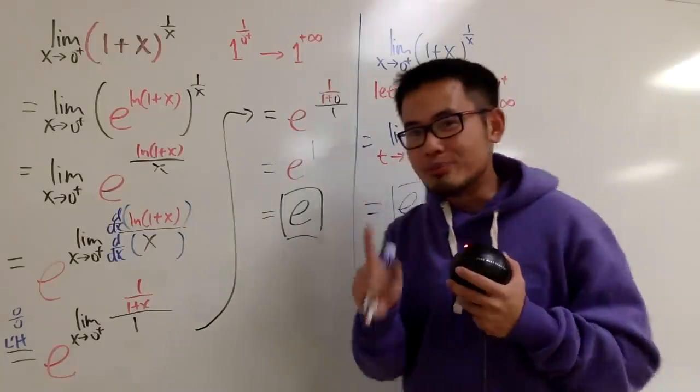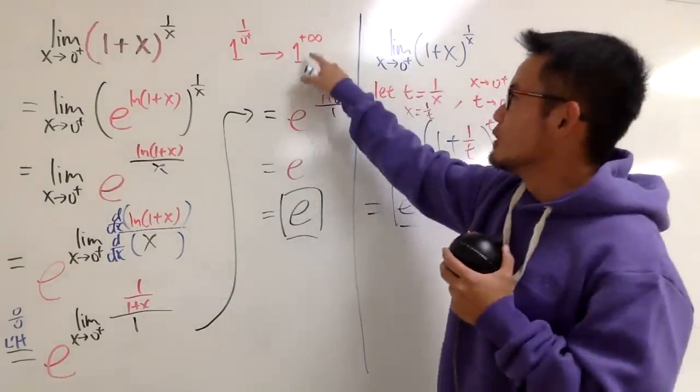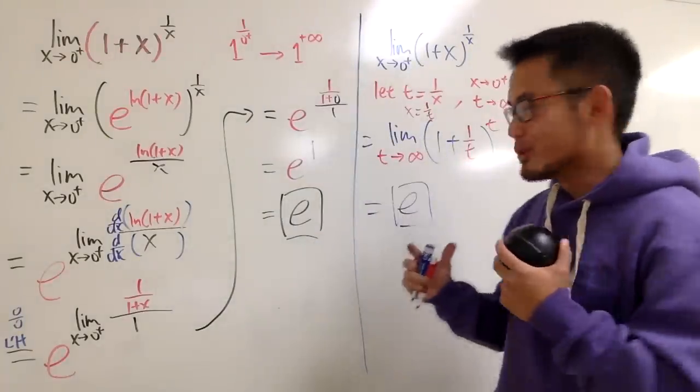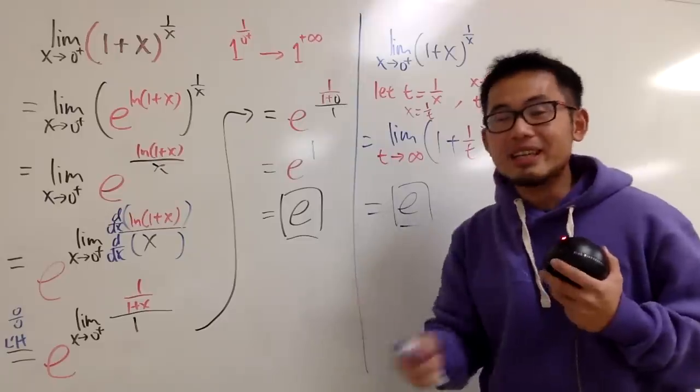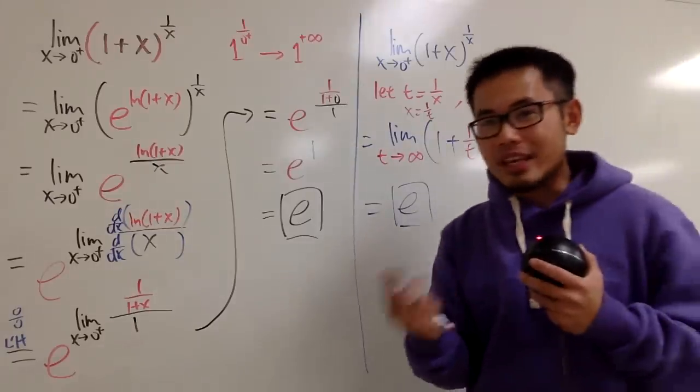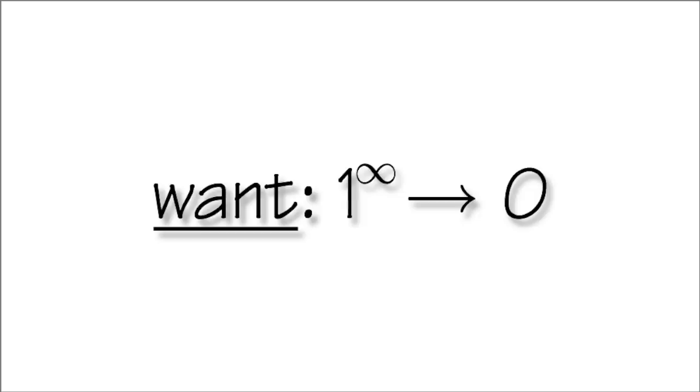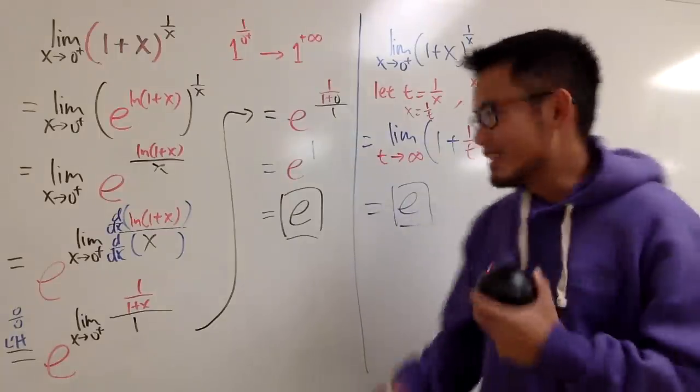Hopefully, next time you remember and you'll be convinced that 1 to the infinity's power, it can go to a lot of different places. And as a challenge, maybe you guys can help me out as well. Is it possible to have 1 to the infinity's power to approach to 0? Let me know in the comment section. Anyway, that's it.